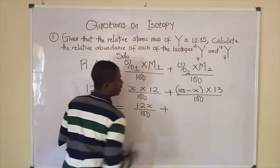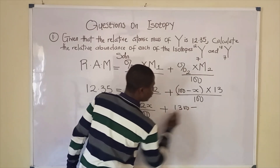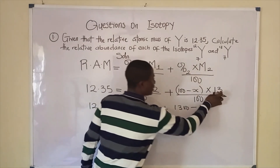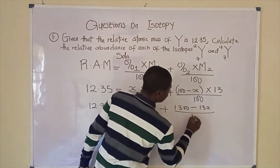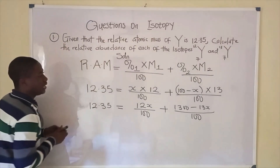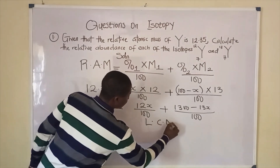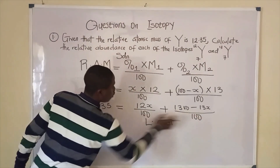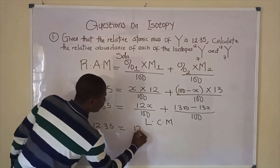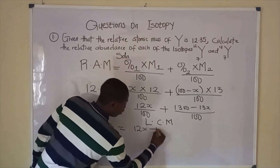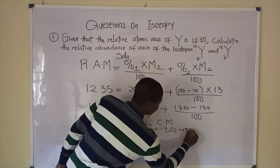Expanding the bracket: 13 times 100 gives 1300, and 13 times X gives 13X, so we have 1300 minus 13X, all divided by 100. Taking the LCM for both sides, we get 12.35 equals 12X plus 1300 minus 13X.